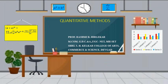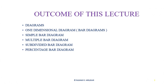Hello everyone, welcome back to the session on quantitative methods, continuing with chapter one: organization and presentation of data. Today we are going to learn about diagrams. There are two types: one-dimensional diagrams and two-dimensional diagrams. In one-dimensional diagrams there are different types such as simple bar diagram, multiple bar diagram, subdivided bar diagram, and percentage bar diagram. In two-dimensional diagrams, we will discuss the pie diagram.